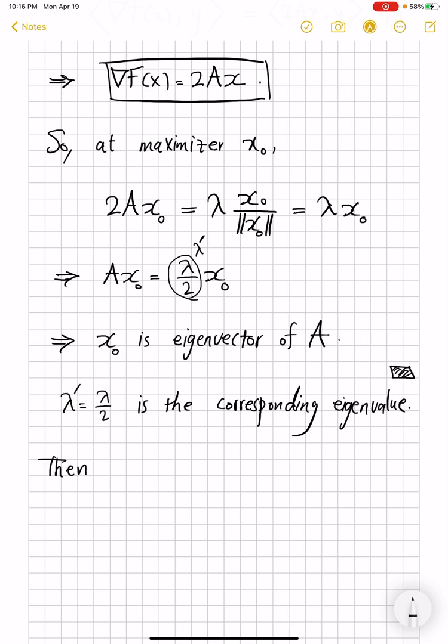Then what we have is that the maximum of this F(x), subject to norm x equal 1, is happening at this eigenvector. So x0 transpose Ax0. But this is x0 transpose, and we know that Ax0 is lambda prime x0. And this becomes equal to lambda prime because x0 transpose times x0 is norm of x to power 2, which is equal to 1. And so this is eigenvalue.